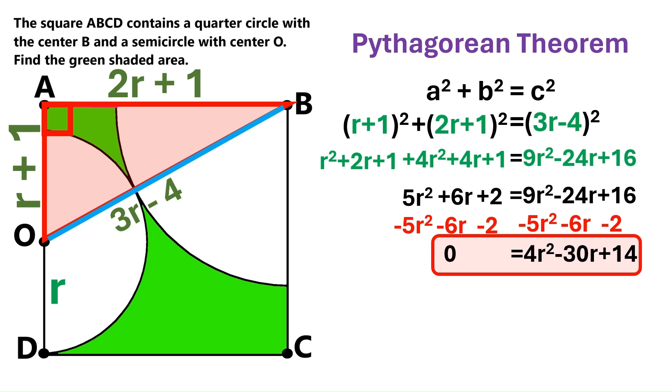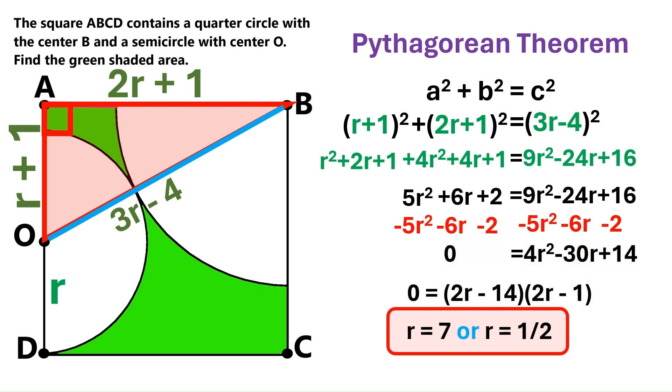We've got a quadratic equation, which can be factorized into this. So that r must be either 7 or 1 over 2.